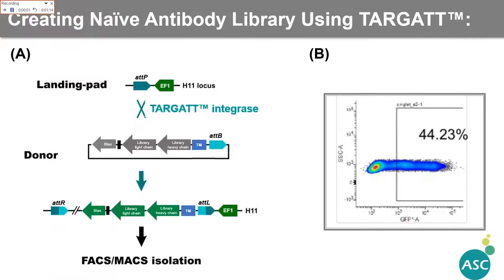The landing pad containing the attP site and the promoter was placed in the H11 safe harbor locus, as it enables efficient gene knocking and higher level of expression. The donor containing the library antibody DNA at the attP site and selection marker will be integrated into the master cell line containing the landing pad to generate the final library cell pool. With our improved expression vector, we are able to achieve target integration with an efficiency of about 44%, as assessed through a split cassette GFP assay.